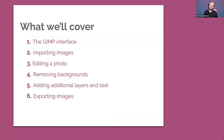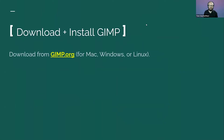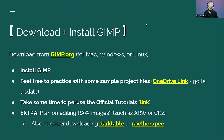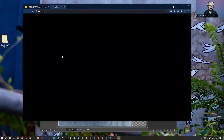As far as what we'll cover: we're going to look at the GIMP interface, how to import images, edit a photo, remove its background, add additional layers and text, and ultimately export that image into a file we can take to the internet. GIMP is available for download and installation on Mac, Windows, or Linux.